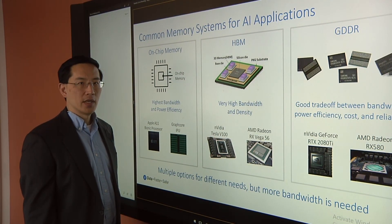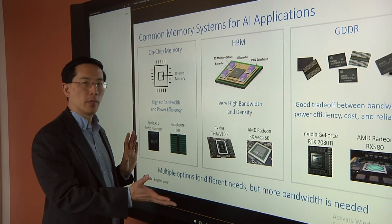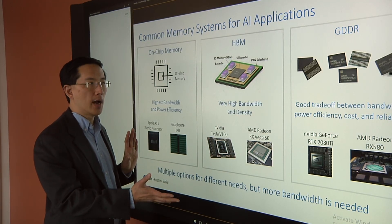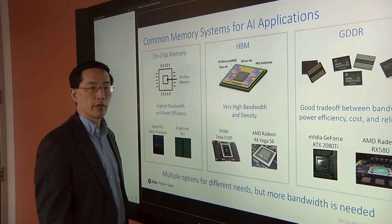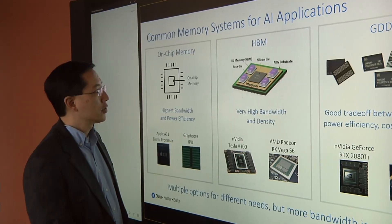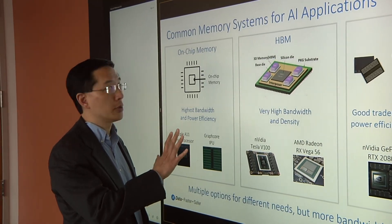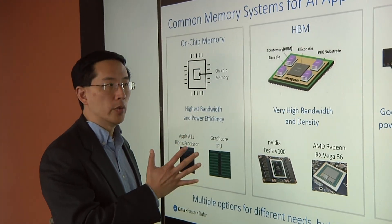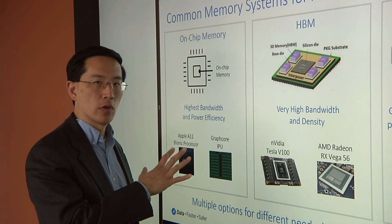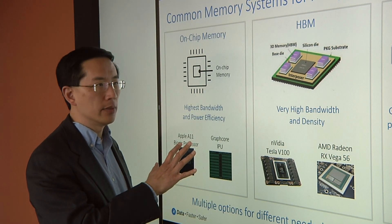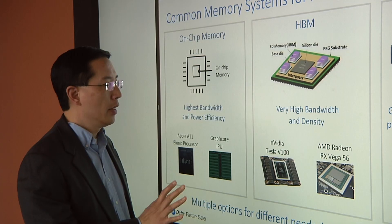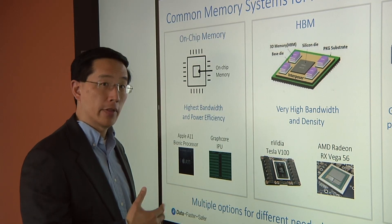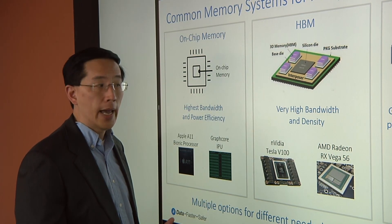So let's drill down into this. Sure. What are we looking at here? This chart here shows some very common memory systems that are used in AI, especially in data centers. I wanted to go over what each of these options are — they're very popular today — and some of their benefits. On the left, we see one really popular option called on-chip memory. We can store a lot of the model parameters and things related to AI processing directly in memory stored on the chip.